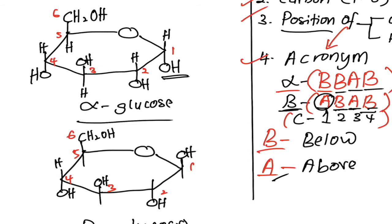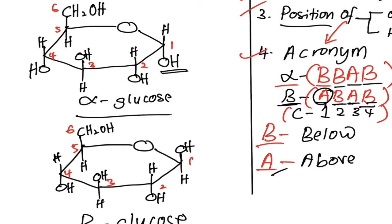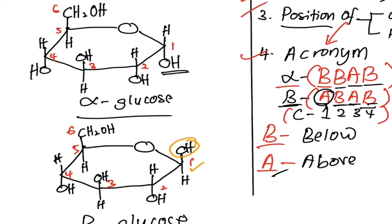Now we complete the glucose with hydrogen atoms. Double check again. Carbon number one, hydroxyl group will be above the plane of the ring. So this is our beta glucose.